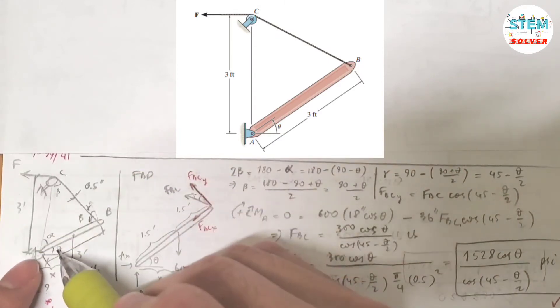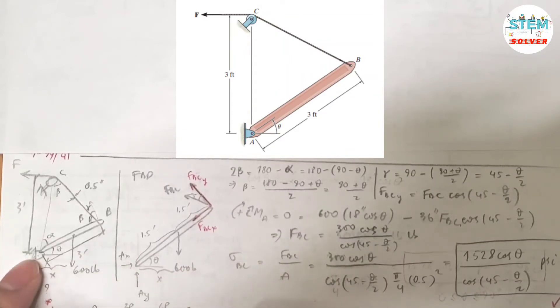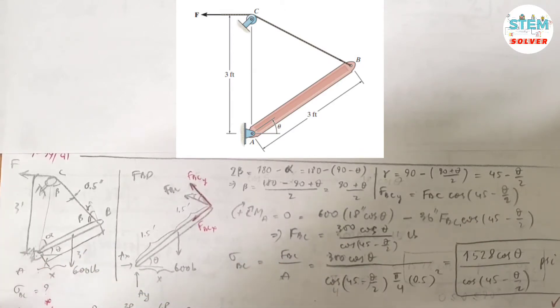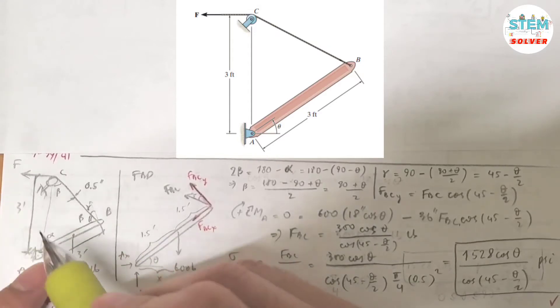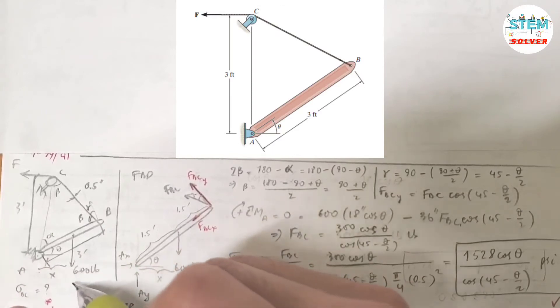Right here, you don't know this angle. Can we find that angle? You don't know this angle. And we are going to find the normal stress in BC in terms of the angle. Keep this angle.